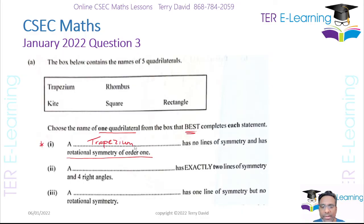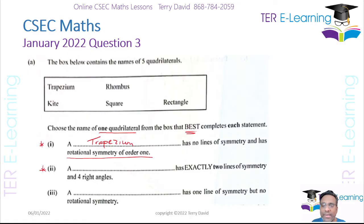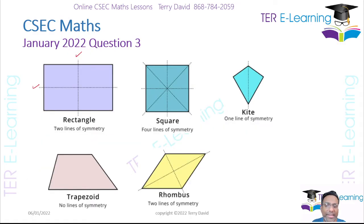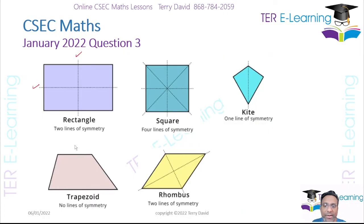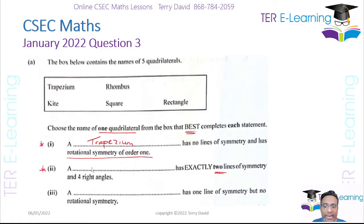The second description: something has exactly two lines of symmetry and four right angles. Four right angles means either a square or a rectangle, but they said only two lines of symmetry. Looking at the diagrams, the only one that fits is the rectangle, so the answer for this one is rectangle.